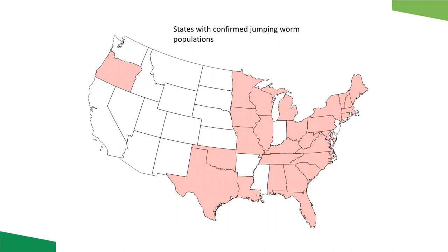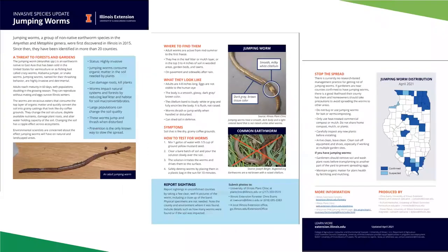There are a lot of states that have reported jumping worm populations, and this is a widespread issue being recognized more broadly than previously thought. In Illinois, we have a couple of publications on jumping worms — one of our more recent ones goes into detail and is available at extension.illinois.edu. We put this publication out to get more information and get people to report jumping worms, and we'll go over those details and more in this presentation.